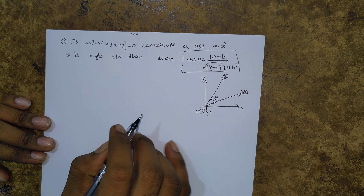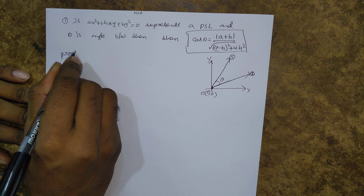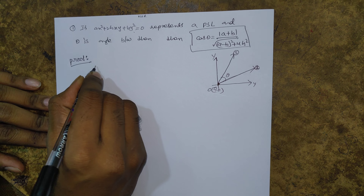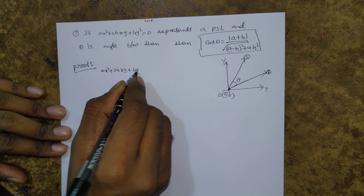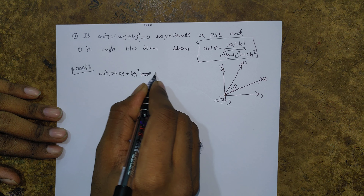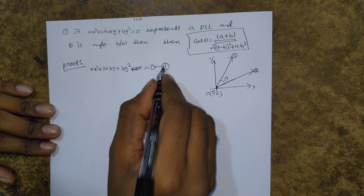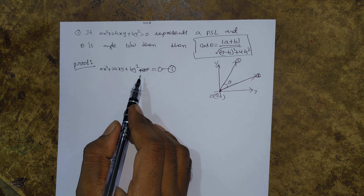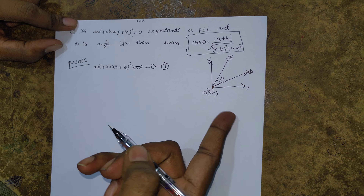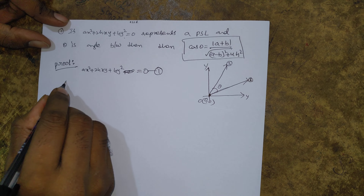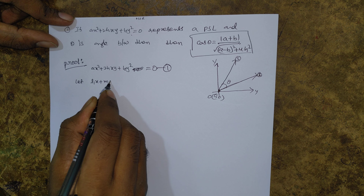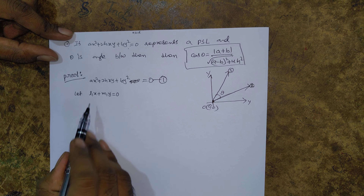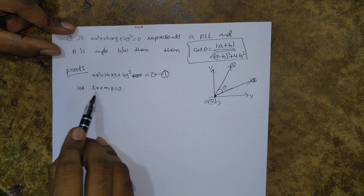For the proof, the given equation ax² + 2hxy + by² = 0 is a homogeneous equation (Equation 1). This represents two lines, both passing through the origin. Let those two lines be: L1x + M1y = 0 — this equation has no constant term, so it clearly passes through (0, 0). This is Equation 2.